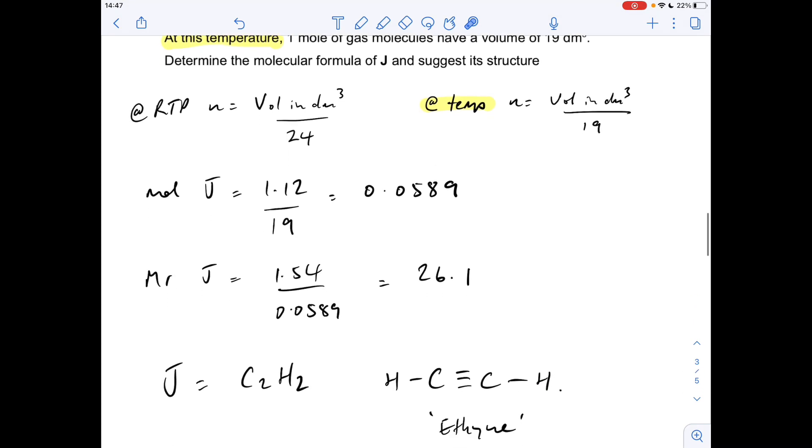So J was C₂H₂, and the structure, you need a triple bond between the two carbons, and then you've got one more available bond, each side, to those two hydrogens. And that, by the way, is an alkyne molecule, and it's called ethine, the alkyne with two carbons.